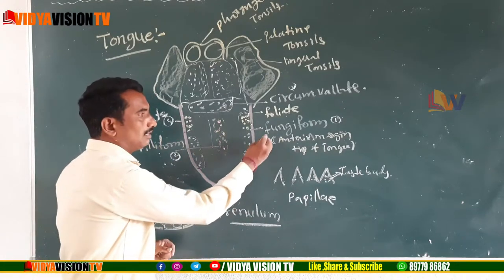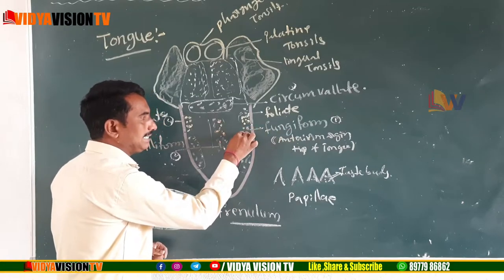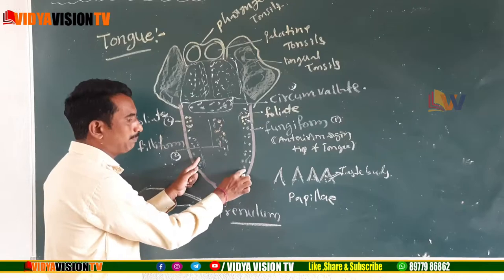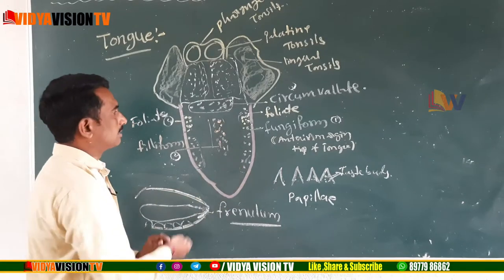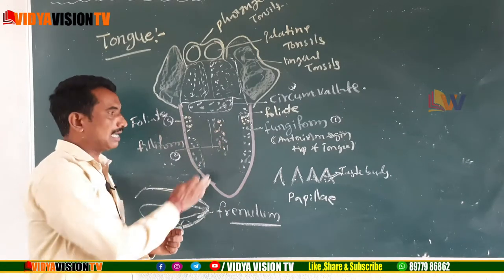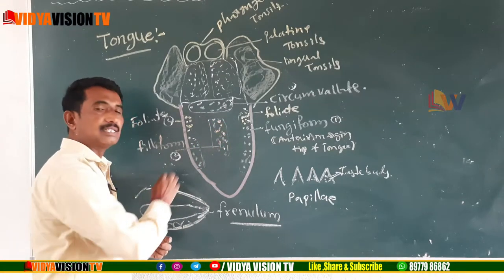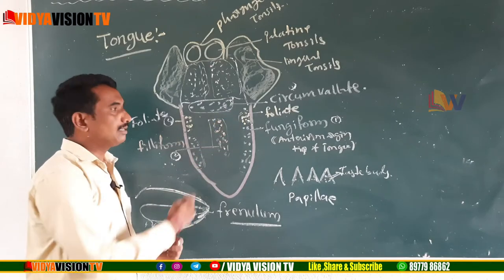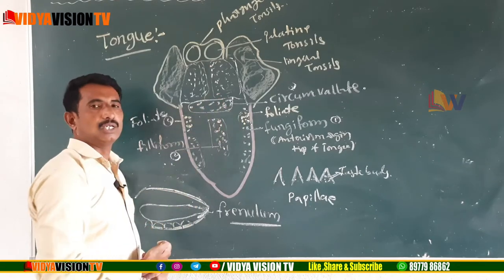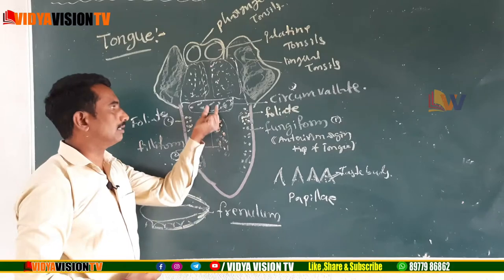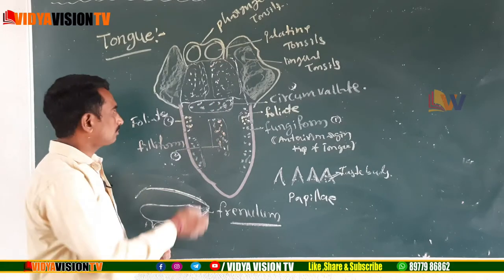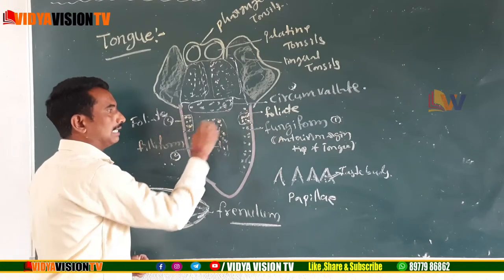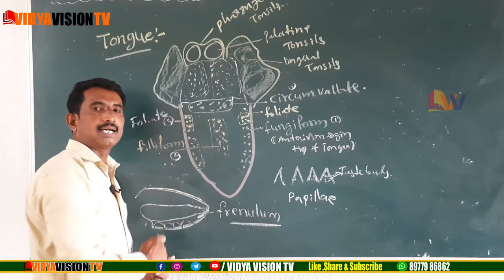Regarding the location of papillae on the tongue: fungiform papillae are at the anterior margin and tip of the tongue; filiform papillae are in the middle on the surface of the tongue; circumvallate papillae are at the posterior of the tongue; and foliate papillae are on the lateral side of the posterior of the tongue.